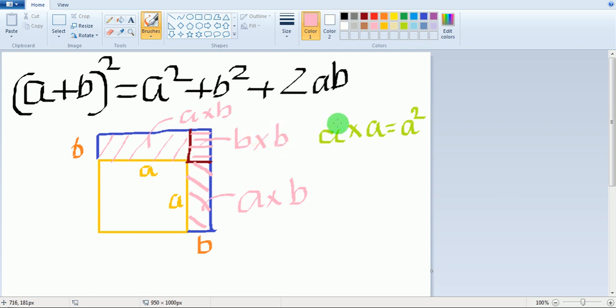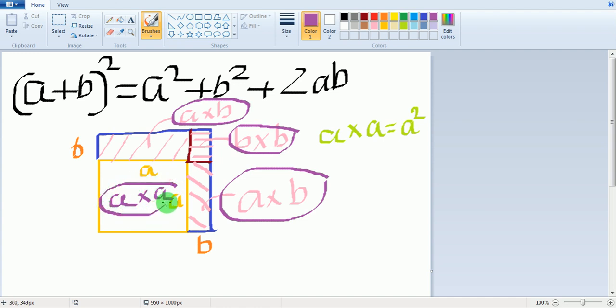Now sum up all these areas: a into b, a into b, b into b, and this area a into a. It will be a², plus b² for this area, and the two rectangles a into b each give plus 2ab.